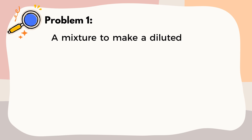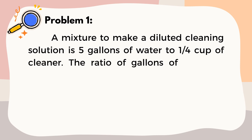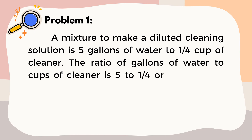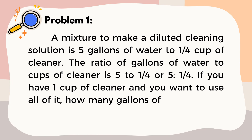We're going to read the first problem. A mixture to make a diluted cleaning solution is five gallons of water to one-fourth cup of cleaner. The ratio of gallons of water to cups of cleaner is five to one-fourth. If you have one cup of cleaner and you want to use all of it, how many gallons of water do you need?